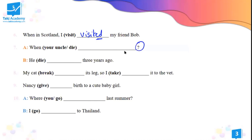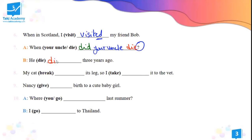When your uncle die — question. I want you all to do this correctly. Excellent, everyone — I didn't see any mistake. So: when did — and then the subject, your uncle — and the verb, 'die', just the way it is. The answer is: he died three years ago. This is regular, so we simply add -d.